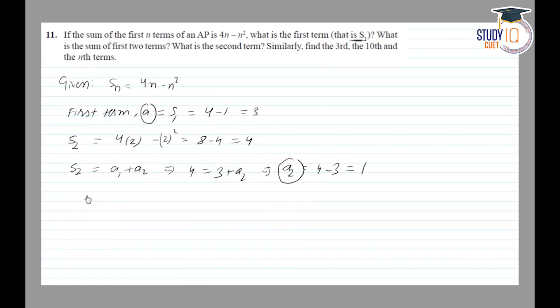Common difference d will be a2 minus a1, which is 1 minus 3, so common difference is minus 2.